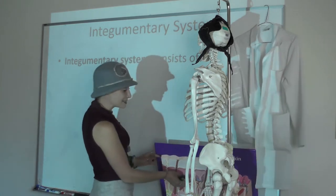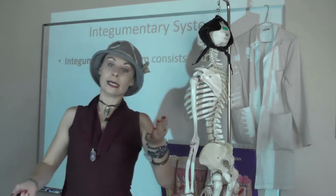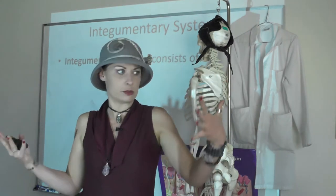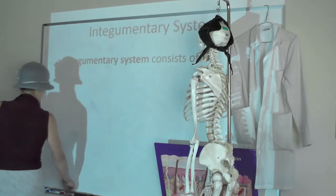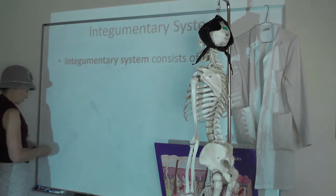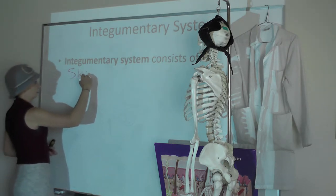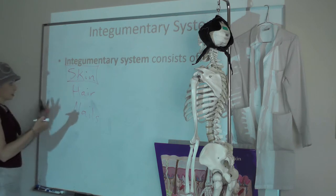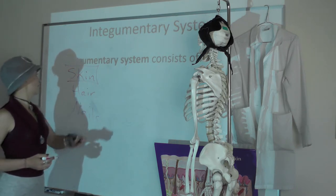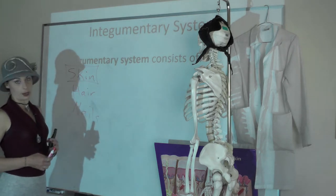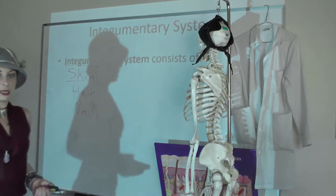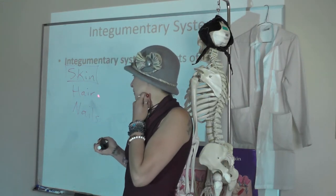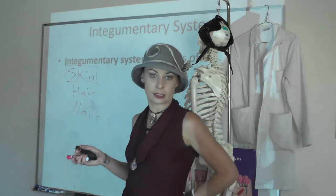The Integumentary System is an organ system. The skin is the biggest organ, but the other organs of the Integumentary System are your hairs and your nails. So the Integumentary System consists of skin, hair, and nails. The skin is our largest organ — it has sensory receptors and glands in it, so it's a pretty complex organ. We'll spend the most time talking about the anatomy and physiology of the skin, just briefly covering the functions of hair and nails, but we'll go into detail on the anatomy of the hair follicle.